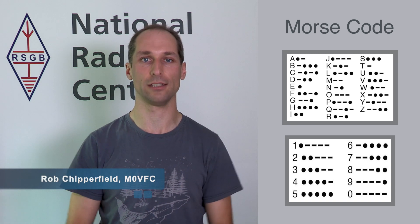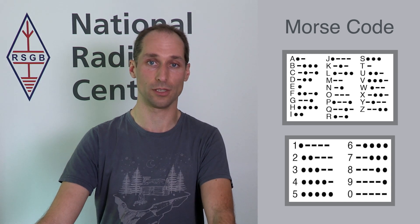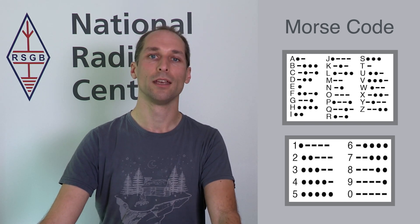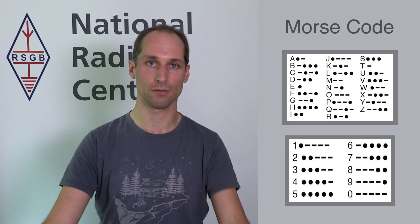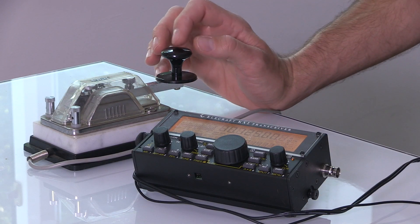We're going to take a look now at Morse code. Morse code isn't a requirement for the amateur radio license anymore, but a lot of operators still get a great deal of enjoyment from making contacts using it — you can get some amazing distances with really low power and simple equipment. We send Morse code using a series of short dots or longer dashes. For example, if I wanted to send the letter A, it's dot-dash.